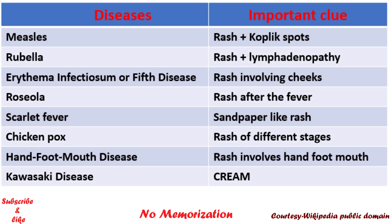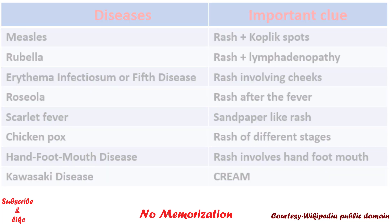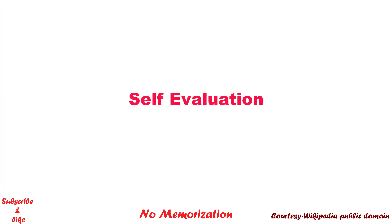In summary, you must get at least one question in your exam from childhood rashes. All you need is to know the key differentiating points from each other. The examiner will always try to trick you, but hopefully after watching this video you will be able to choose the right answer. Now we will do some exercise — I will show some pictures and you need to write the answer in the comment box.